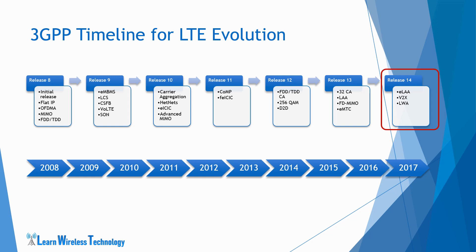Release 14 saw a number of mission critical enhancements, support for V2X services, eLAA, 4-band carrier aggregation, and inter-band carrier aggregation. Release 14 also includes work on Internet of Things, voice and multimedia related features, radio improvements, etc.